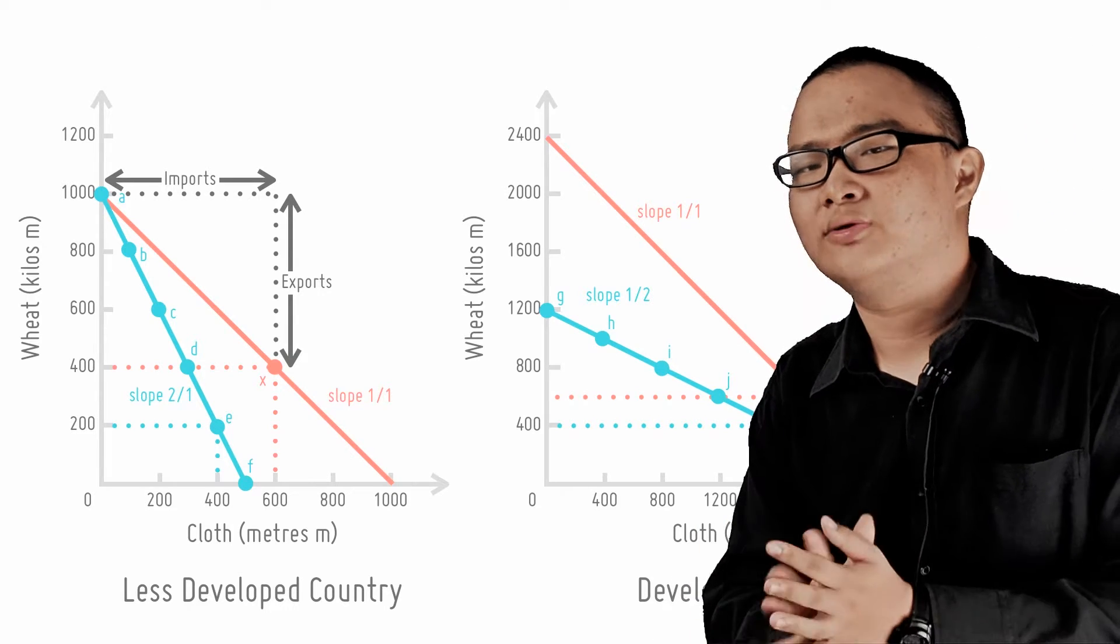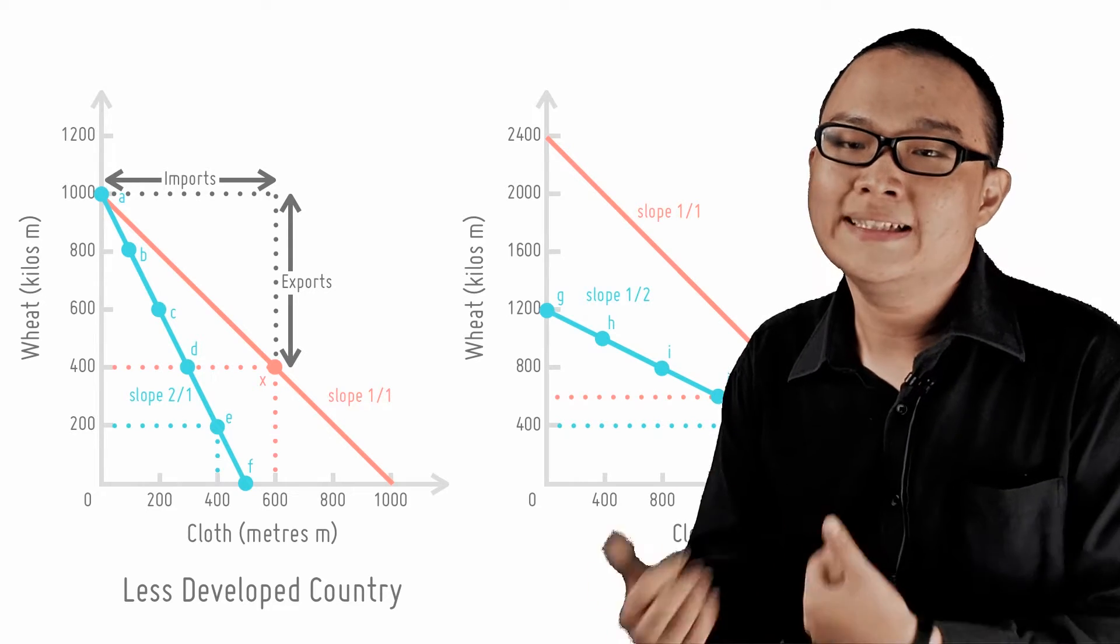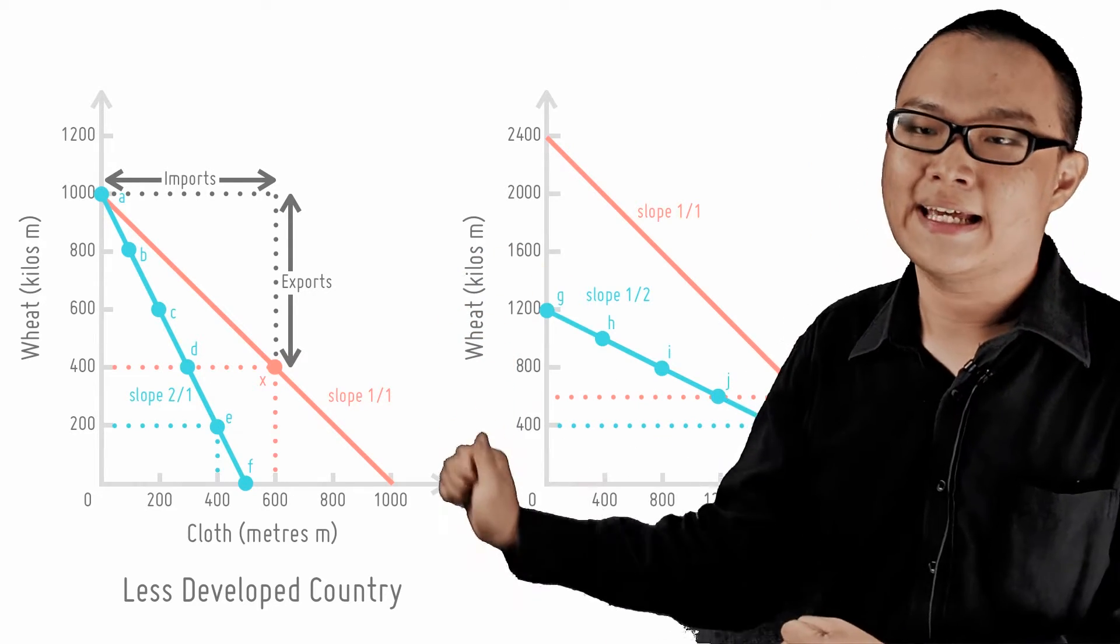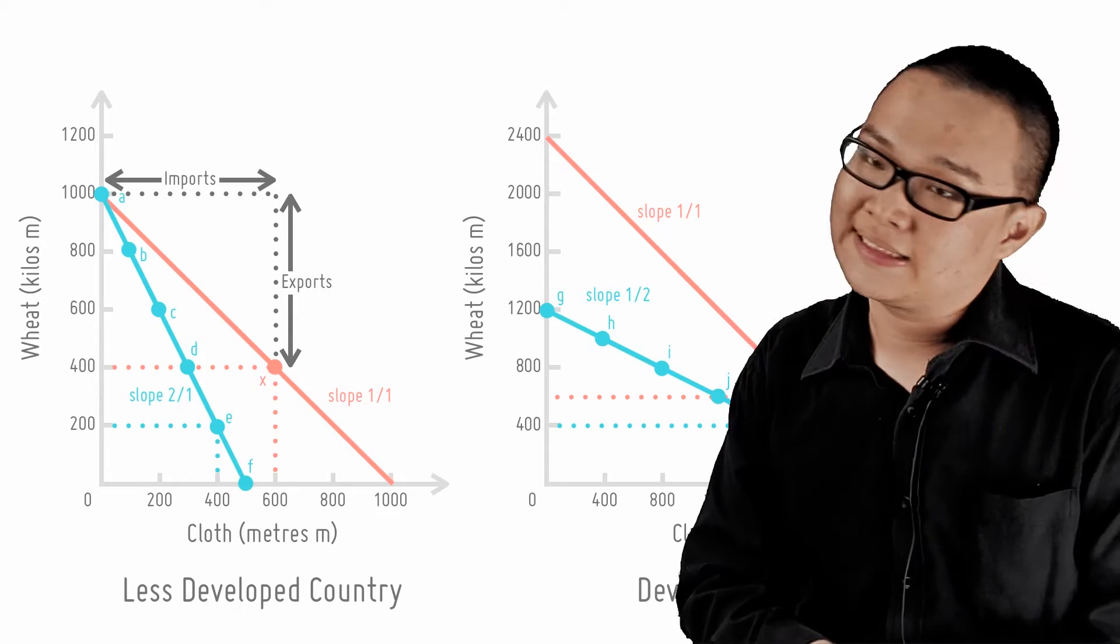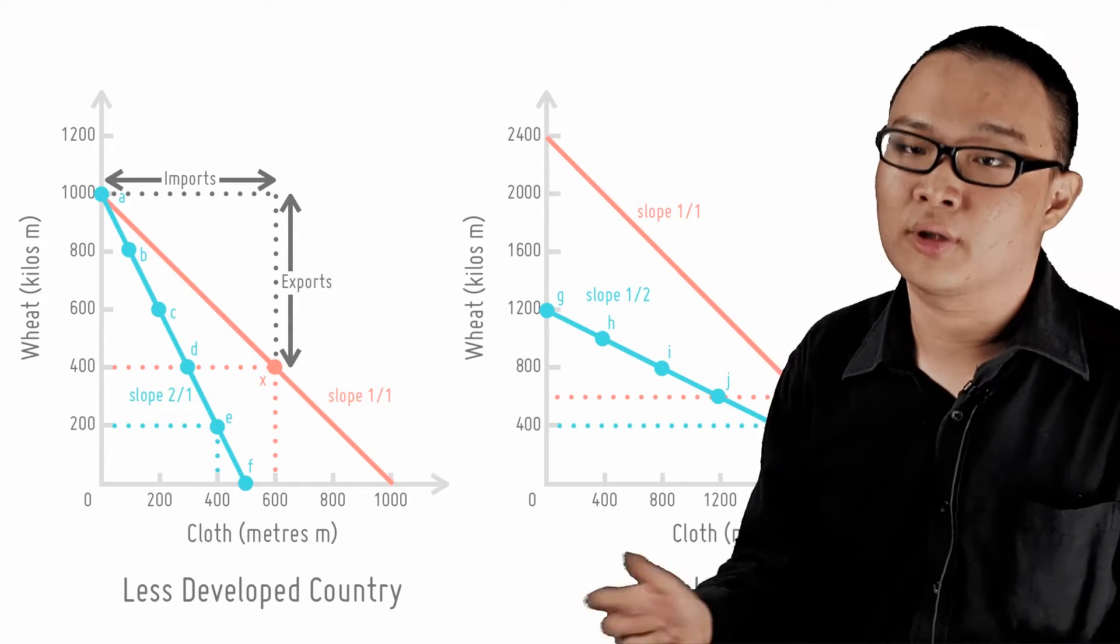But now, both countries trade. As the LDC has a comparative advantage in wheat, it will only make wheat, 1,000 kilograms, point A, and no cloth at all. The DC will make 2,400 meters of cloth but no wheat, which is point M on the diagram.